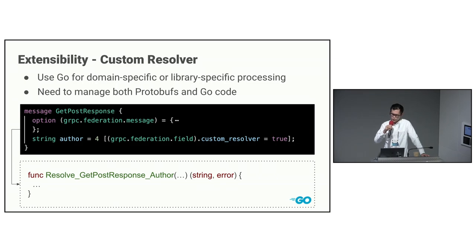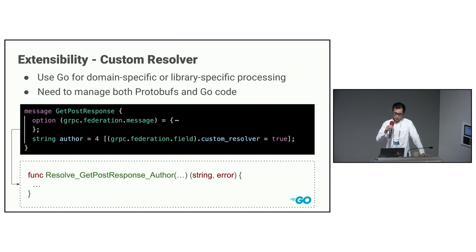Even though we provide various features in our DSL, we don't believe we can cover all use cases with them. So to ensure extensibility, one feature we offer is a custom resolver. With a custom resolver, you can implement domain-specific logic or use third-party libraries in Go. However, to use custom resolvers, users must maintain both protocol buffers and Go code. Therefore, we recommend avoiding their use if possible.